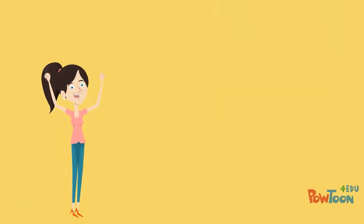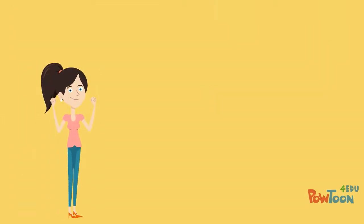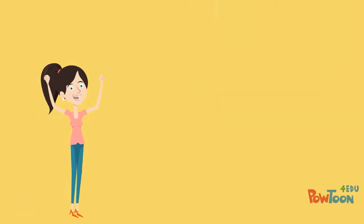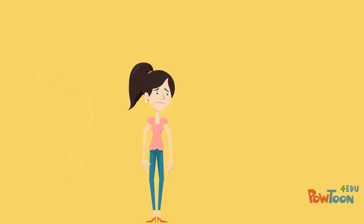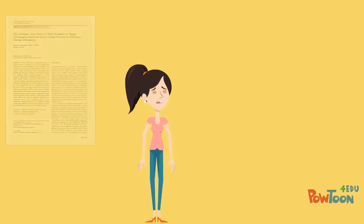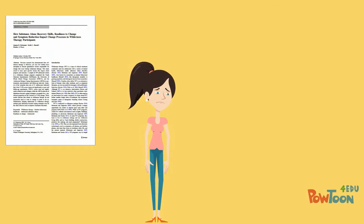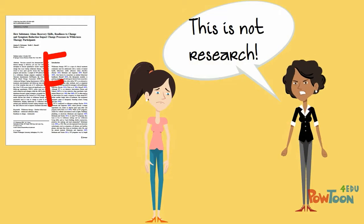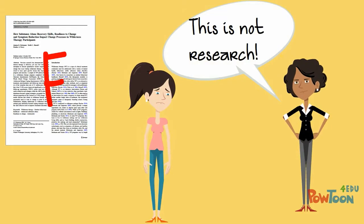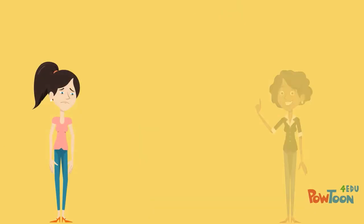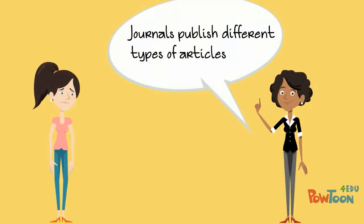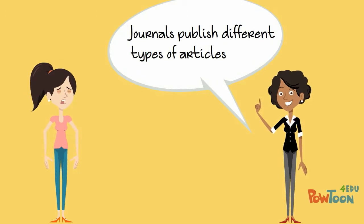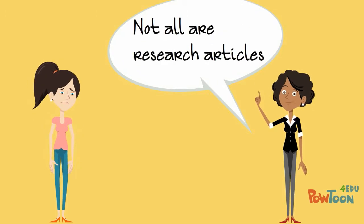Since Anne knew all about scholarly articles, she was surprised when she was told that the article she found was not the right type of article for her assignment because it wasn't a research article. Her professor explained that scholarly journals publish many different types of articles, and not all of them are research articles.